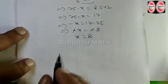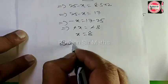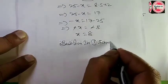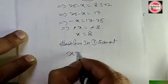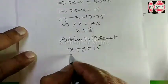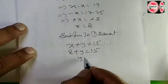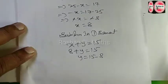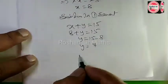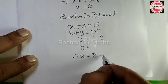Now that x equals 8, we substitute into the first equation to find y. The first equation is x plus y equals 15. So 8 plus y equals 15, giving y equals 15 minus 8, which is 7. Therefore, x is equal to 8 and y is equal to 7.